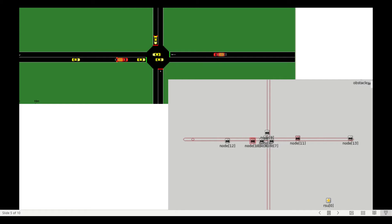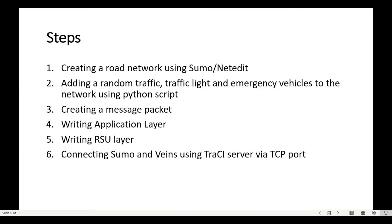To achieve this simulation, we need to first create a road network. You can use SUMO's netedit to create the road network — it's very simple. You just drag and drop some nodes, create junctions between nodes, and so on. Then you can add traffic demand using netedit, but I prefer to use a Python script for adding random traffic and traffic lights to the road network.